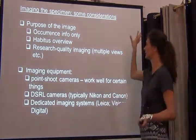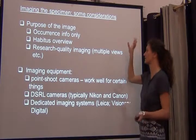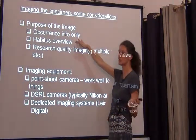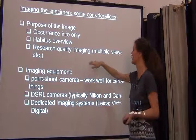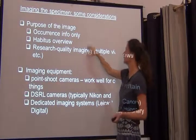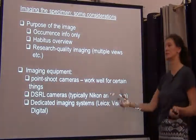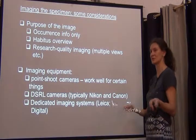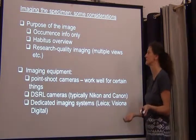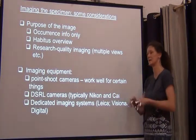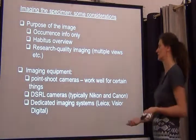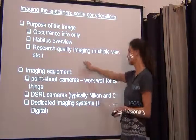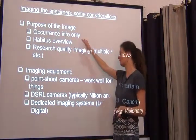Keep in mind the purpose of what you're doing: occurrence info only, where a habitus overview can be good for a lot of things; or research-quality imaging with multiple views and detailed shots — for example, genitalic features are very important in insects, so you might need individual shots of genitalia.